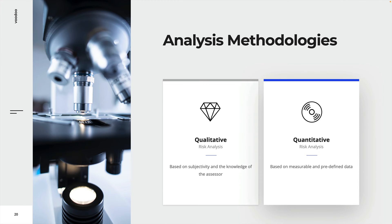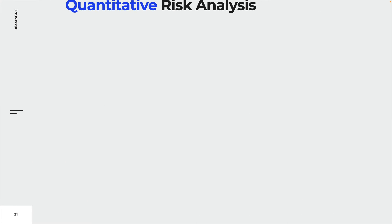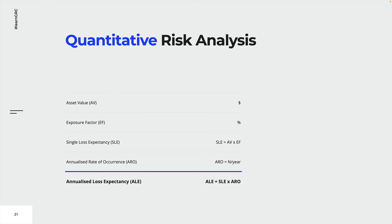Quantitative risk analysis is a more objective approach to analyzing risks. In quantitative risk analysis, organizations try to determine the actual costs and probabilities of risks. This methodology provides more specific information and allows for quantifiable decisions. However, please note that the results of this approach should be considered as estimates and not as exact figures, although the final results can be very close to reality.